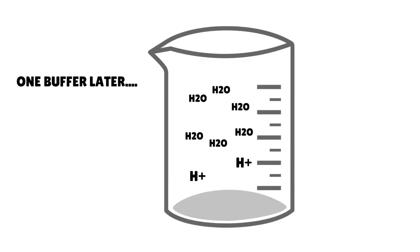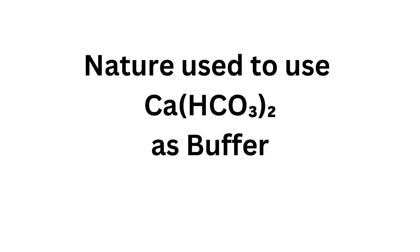Buffers have the capacity to mop up excess H-plus or OH ions and maintain the pH at a constant level. The beauty of it is that nature herself has found a solution to this problem at a much smaller scale, using compounds such as calcium carbonate and calcium bicarbonate as buffers to absorb H-plus ions and maintain a natural pH level.